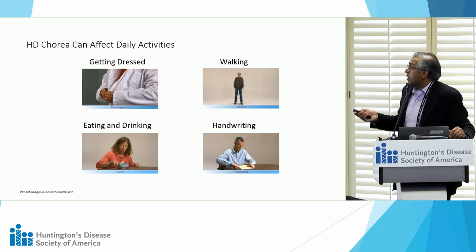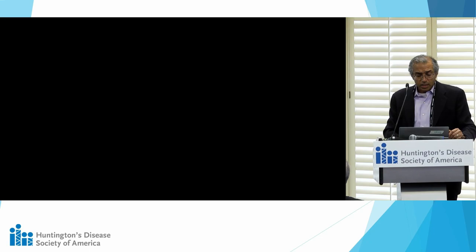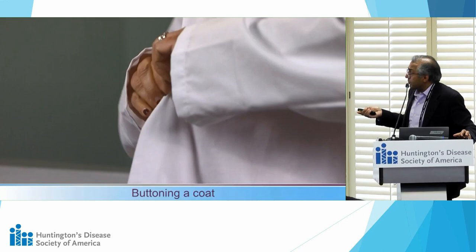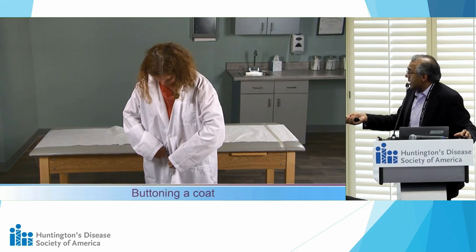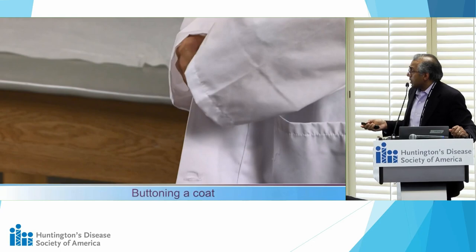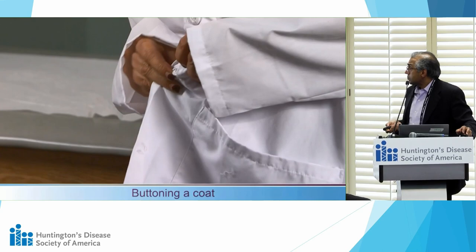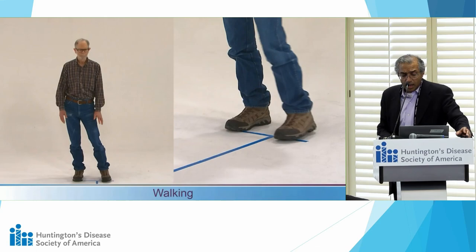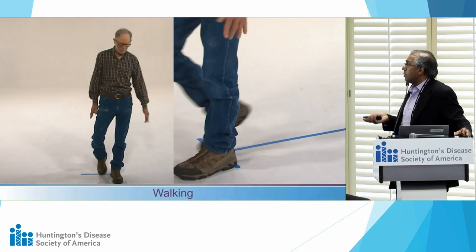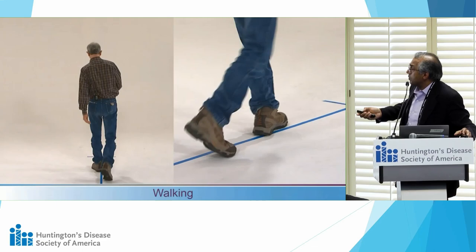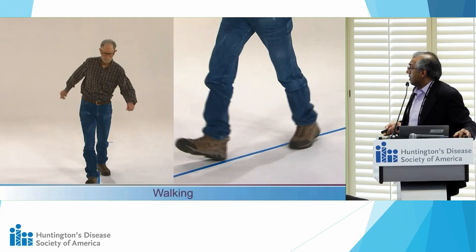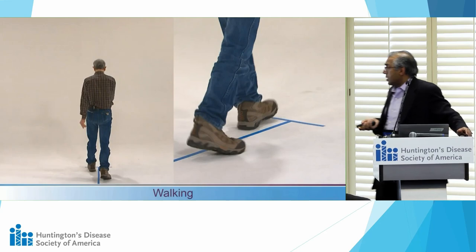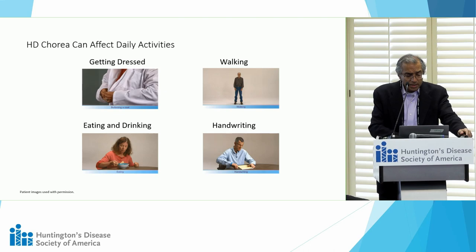Here are some examples of how chorea impacts daily activities. This patient trying to put on a lab coat — because of chorea affecting her trunk and hands — is quite slow in buttoning even large buttons, impacting her manual dexterity and slowing her in day-to-day activities like dressing. This fellow walking along a line almost falls when turning, showing excess movements of his limbs and hips, with irregular stride length, illustrating how chorea may impact someone's mobility.